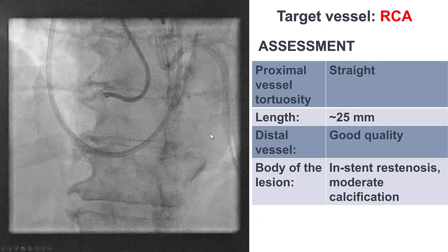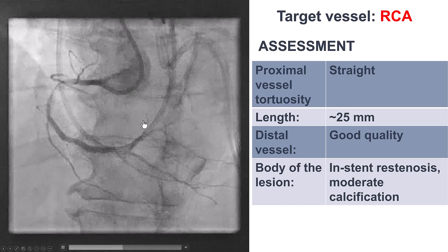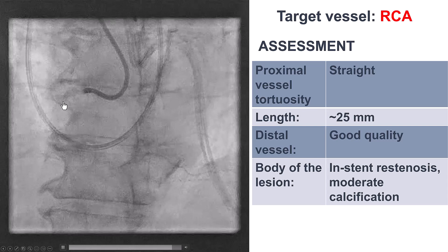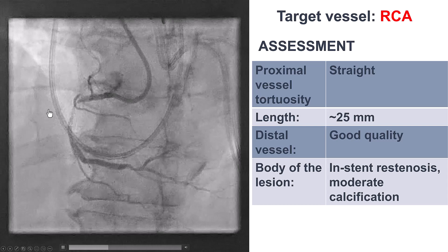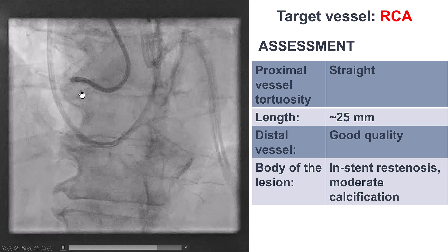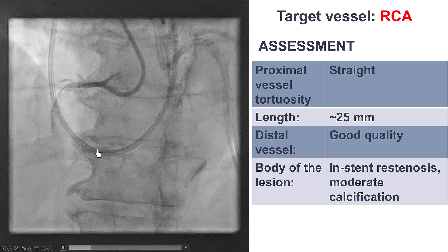We decided to start with the right coronary artery, and that's frequent the case when we do left main PCI. It may be safer to first revascularize the right coronary artery, assuming it's technically feasible, before tackling the left main so as to minimize the extent of ischemia when PCI of the left main is performed. So we have here a calcified vessel with significant proximal stenosis, good quality distal vessel, and this actually was within a previously placed stent.